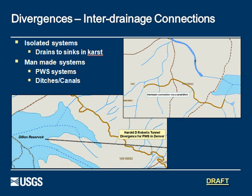Inter-basin connections can either be natural or man-made. Karst systems are one of the most common natural ones. They consist of things like sinkholes and springs, where the water might disappear into a groundwater system and emerge eventually out at another area. Man-made systems are quite common too, because of our public water drinking systems, ditches and canals that are meant to reroute external waters to another area. One of the big ones is the Harold D. Roberts Aqueduct off the Dillon Reservoir to Denver, or the Catskill Aqueduct off of the Ashokan Reservoir in New York City, used for public water systems.